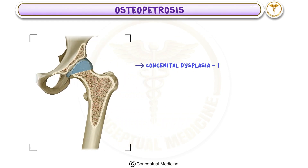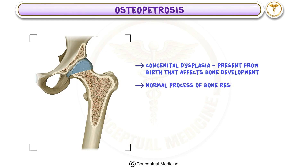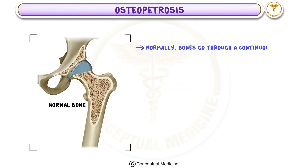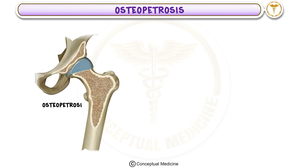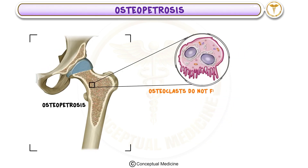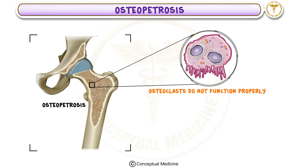Osteopetrosis is a congenital dysplasia, meaning it's a condition present from birth that affects bone development. In this disorder, the normal process of bone resorption is defective. Normally, our bones go through a continuous process of breaking down and rebuilding, carried out by special bone cells called osteoclasts. However, in osteopetrosis, these osteoclasts do not function properly, leading to excessive bone formation.